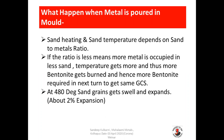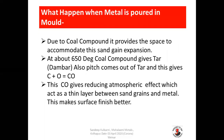What happens when metal is poured in the mold? Sand heating and sand temperature depend on the sand to metal ratio. If the ratio is less, more metal is occupied in less sand, temperature gets higher, and thus more bentonite gets burned — hence more bentonite is required in the next turn to get the same GCS. At 480°C, sand grains expand about 2%. Due to the coal compound, it provides space to accommodate this sand grain expansion. At about 650°C, coal compound gives tar; pitch also comes out of the tar giving carbon monoxide, which creates a reducing atmosphere acting as a thin layer between the sand and the metal, making your surface finish better.